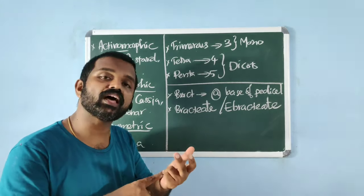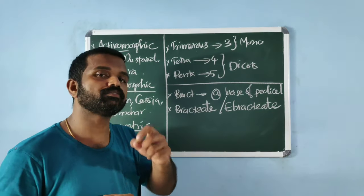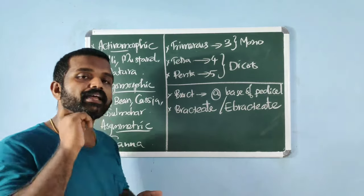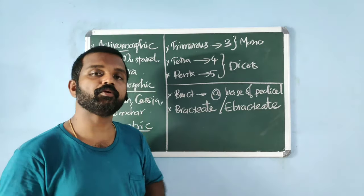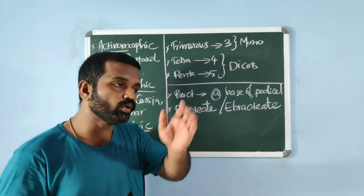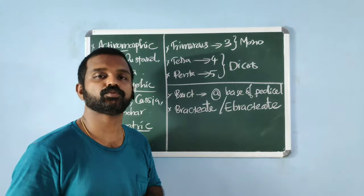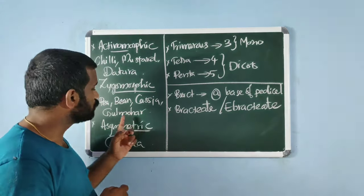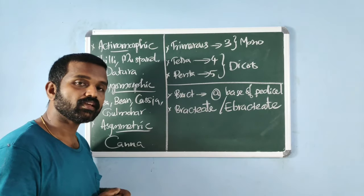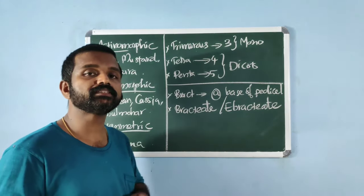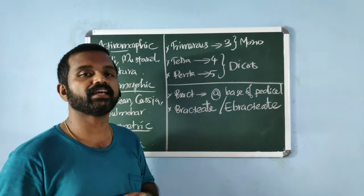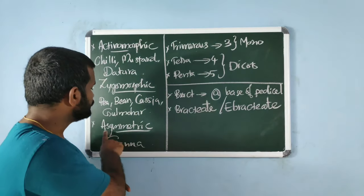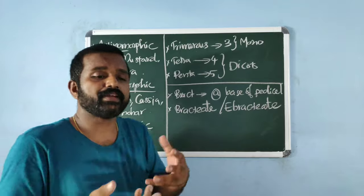In our syllabus, Liliaceae and Solanaceae show actinomorphic symmetry. Zygomorphic means bilateral symmetry — the flower can be divided into two equal halves by only a single plane passing through the center. Examples: pea, bean, Cassia, Gulmohar. In our syllabus, the family Fabaceae is given as an example for zygomorphic symmetry.